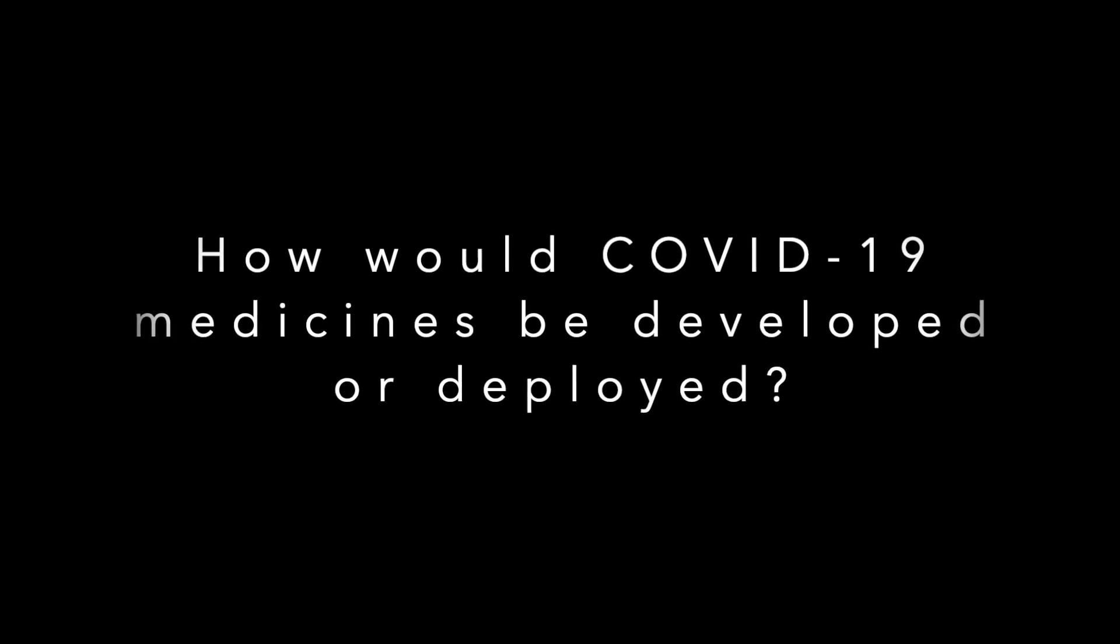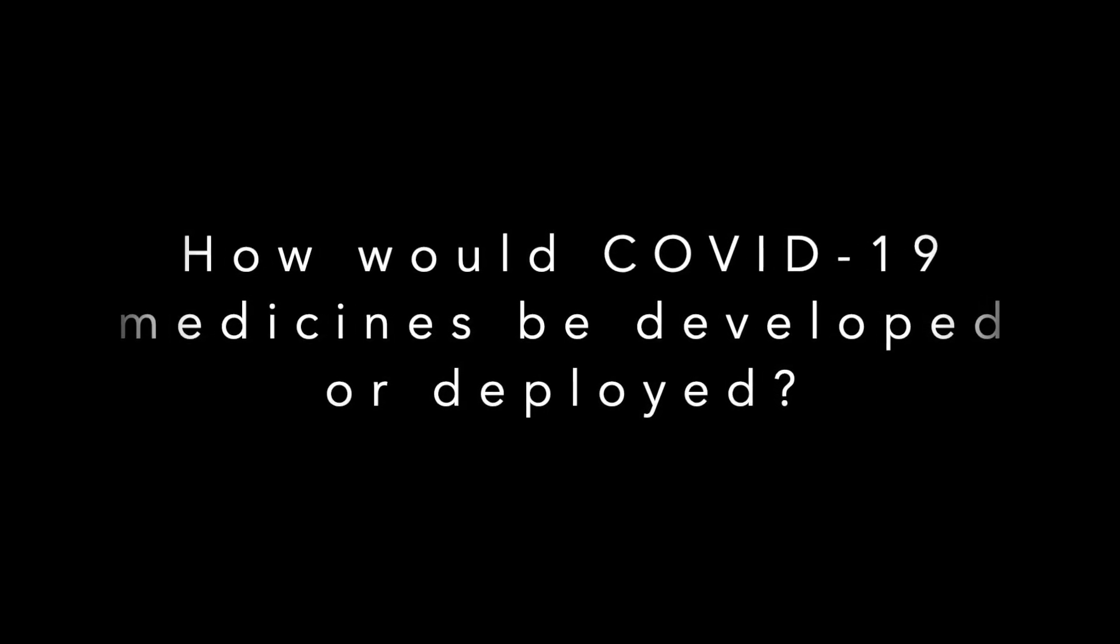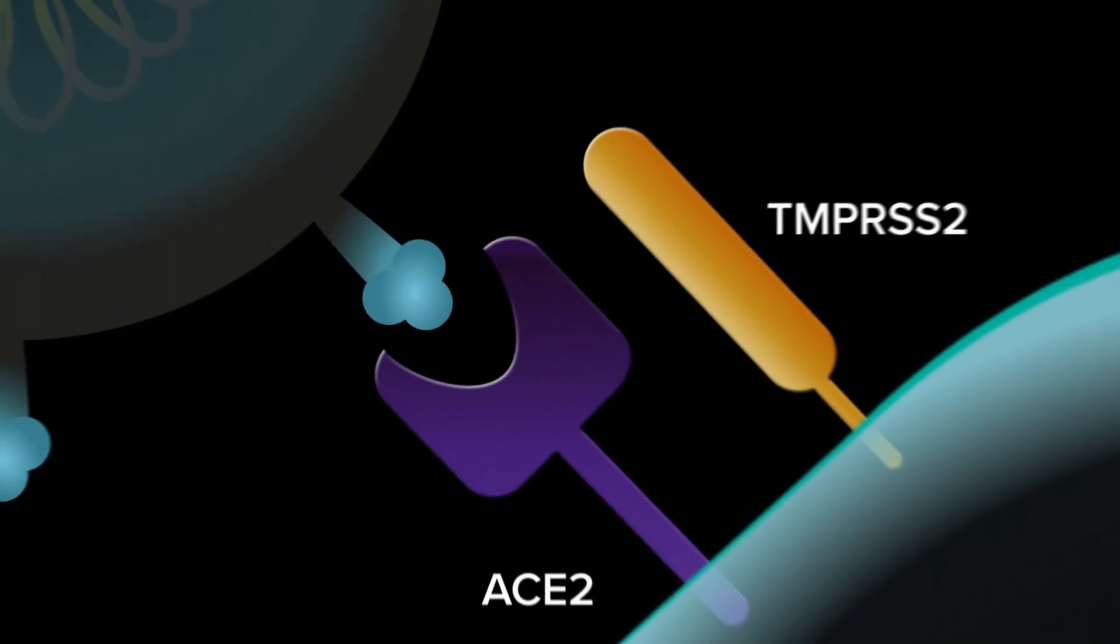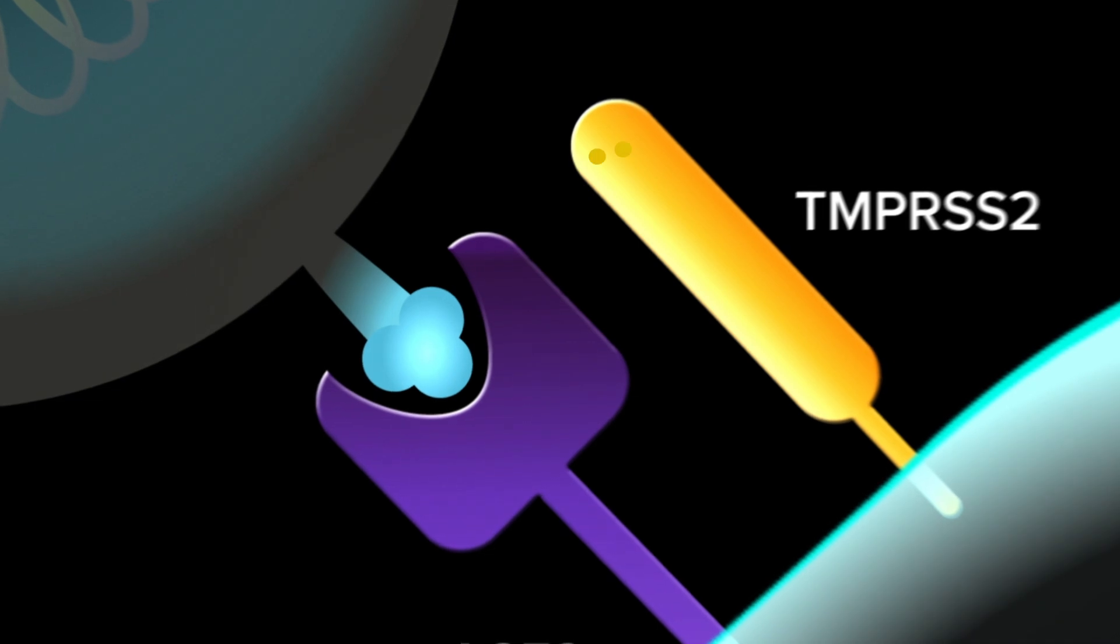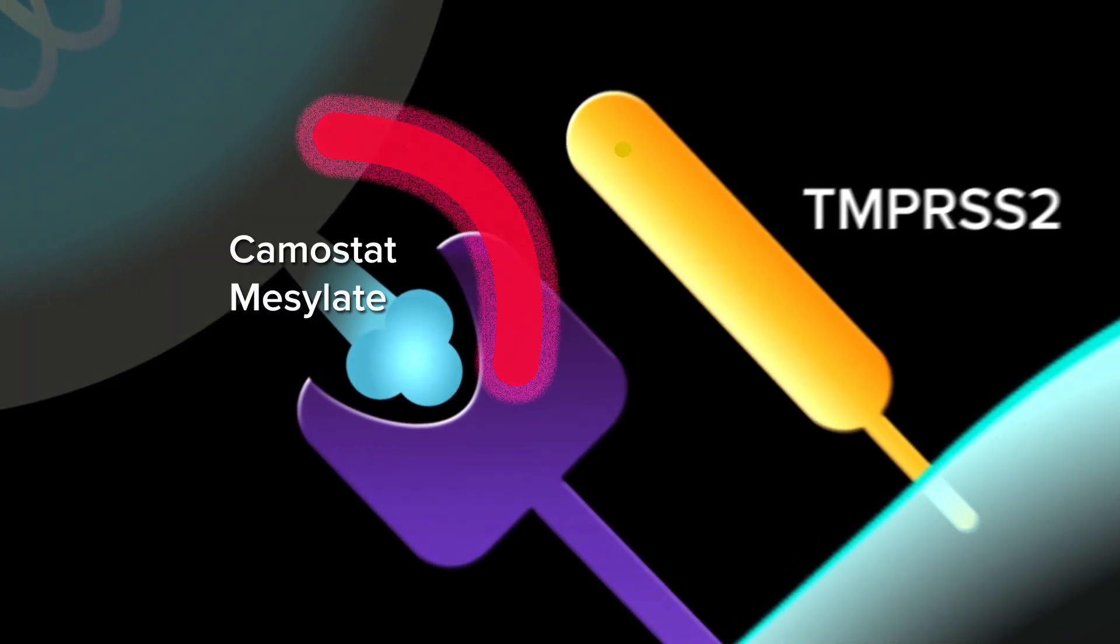How would COVID-19 medicines be developed or deployed? It may be possible to inhibit the priming of the SARS-CoV-2 spike protein by TMPRSS2 using a drug known as Camostat Mesilate.